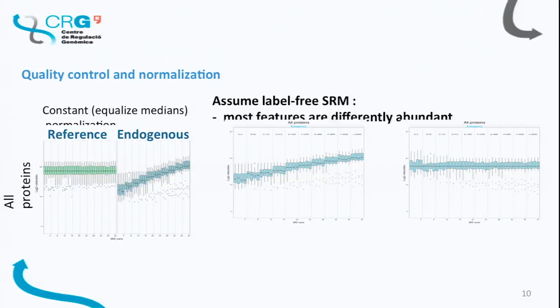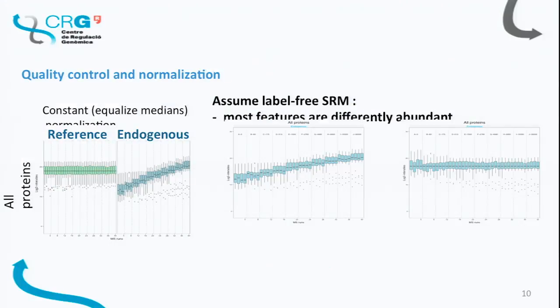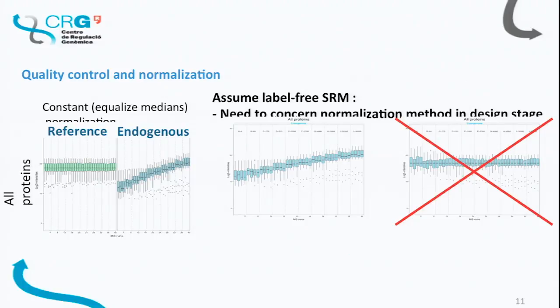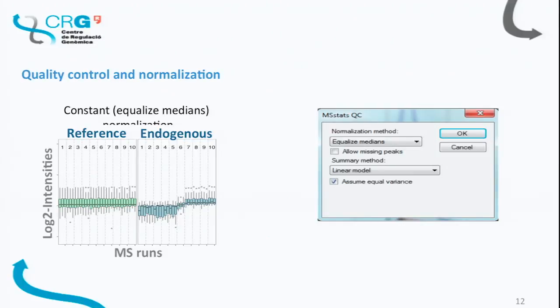Whether to use one normalization type or another depends heavily on your assumptions. For example, in label-free SRM data where you have selected a subset of 10 proteins known to be changing, normalizing would distort true biological differences. It is very important to know what should remain constant in your dataset and choose your normalization step accordingly. This step is well implemented in both R and in Skyline's graphical user interface.